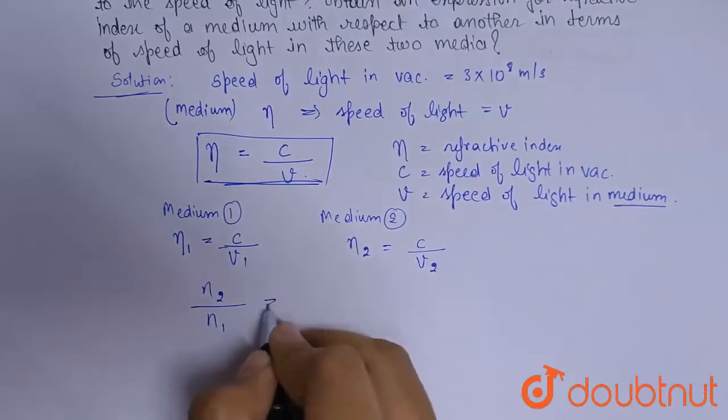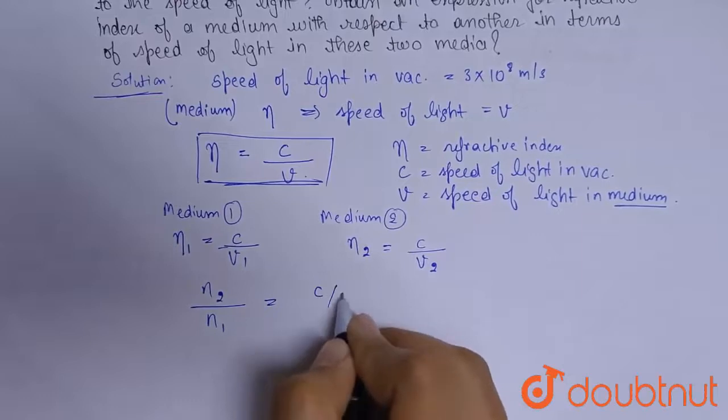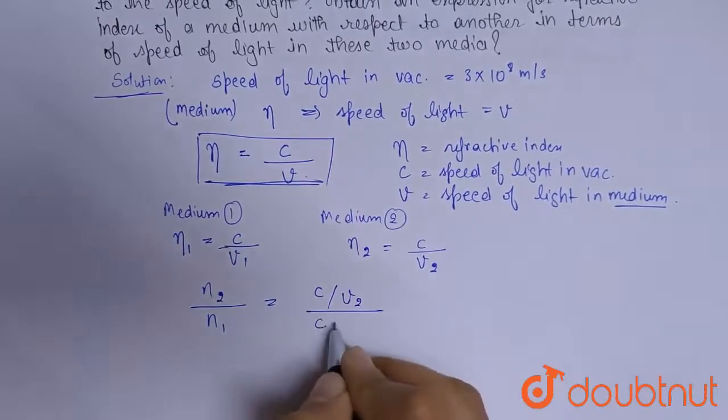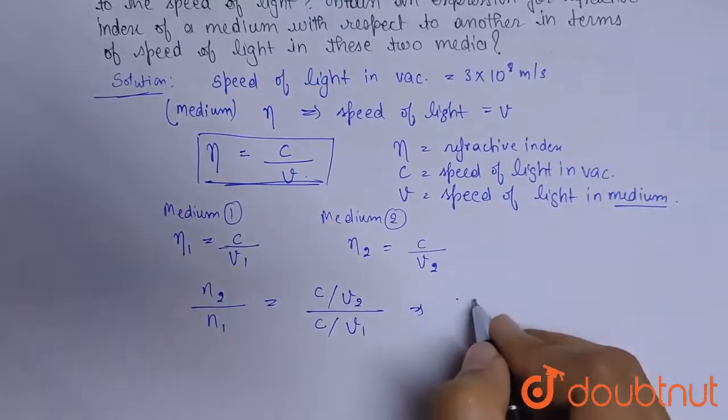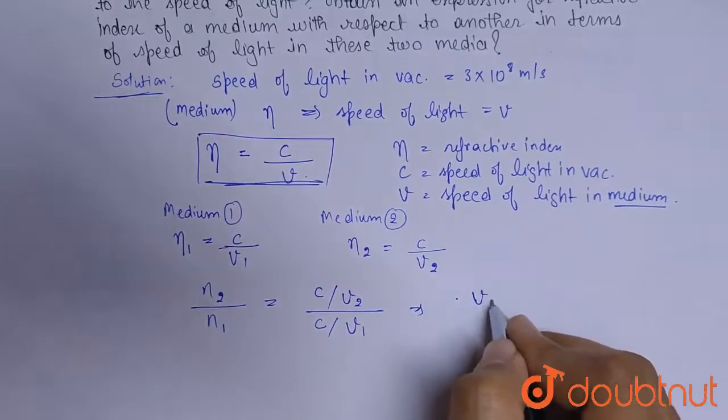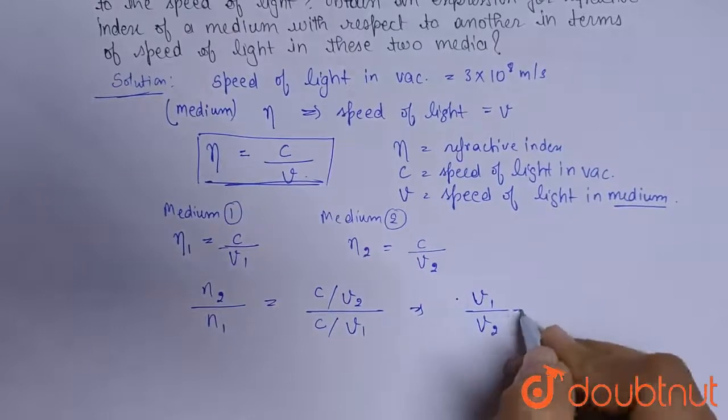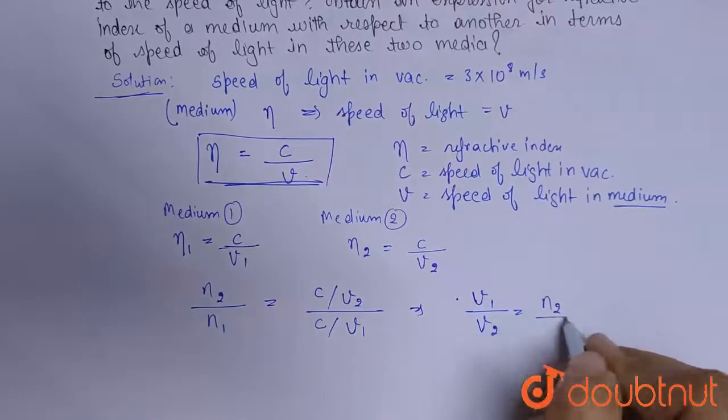Taking the ratio n1/n2, that is c/v1 over c/v2, we will get v1/v2 equals n2/n1.